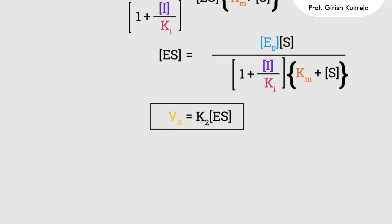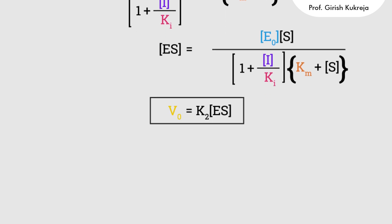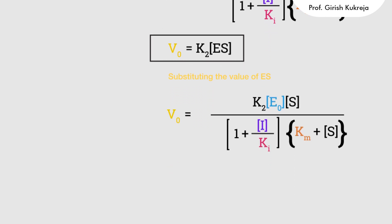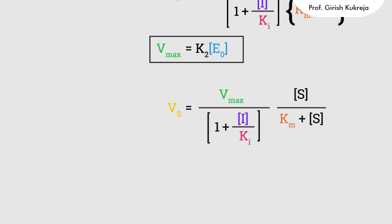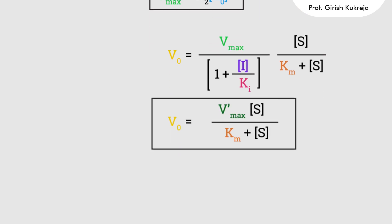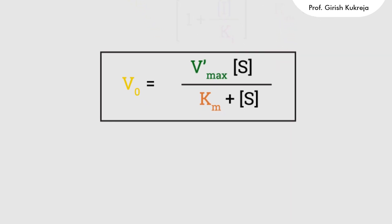Defining V0, we have V0 = K2 × ES. Substituting the above value of ES, we have V0 = K2 × E0 × S / [(1 + I/Ki) × (Km + S)]. Defining Vmax = K2 × E0, we have V0 = Vmax / (1 + I/Ki) × S / (Km + S). So we have the altered value of Vmax represented as V'max, where V0 = V'max × S / (Km + S).